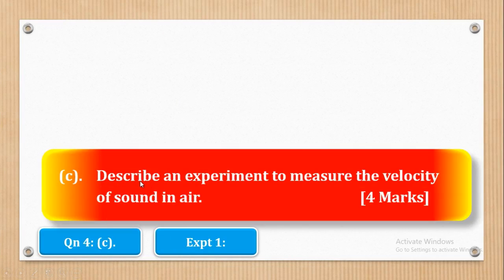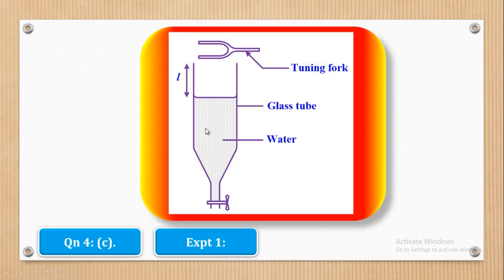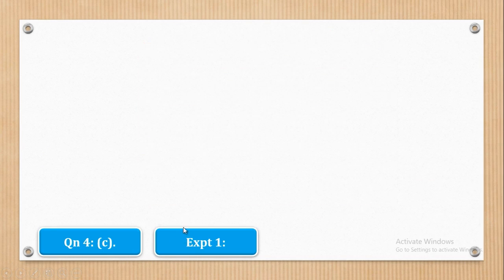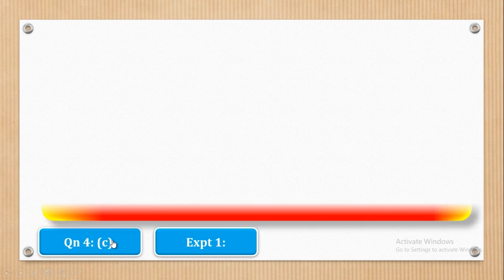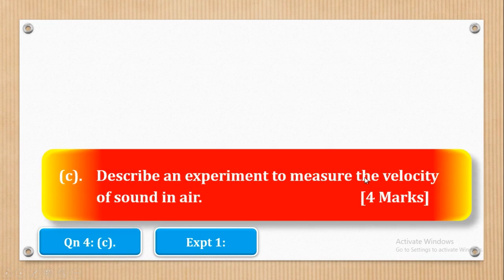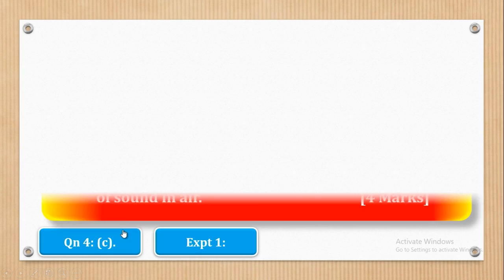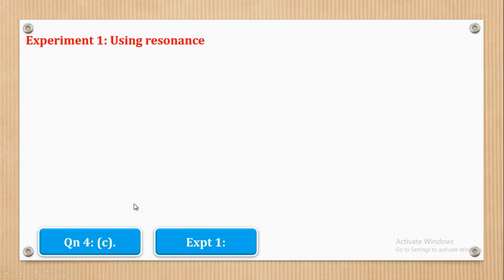Now we shall go to part C. Part C says: describe an experiment to measure the velocity of sound in air. There are two experiments that can be used, and we are going to look at both of them. Let us start with the experiment whereby you use resonance.